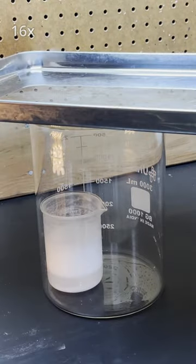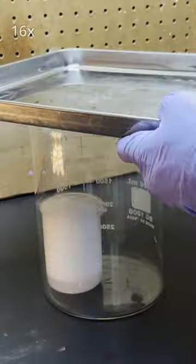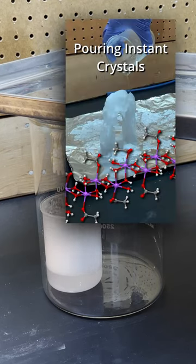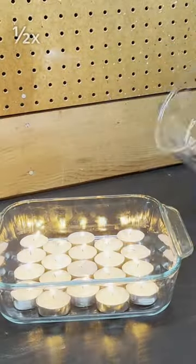When it stops bubbling with more vinegar, you're done. Left over in the smaller container you'll have sodium acetate, which can be used to make instant crystals like I did in a previous video. Have a look at my channel and check it out.